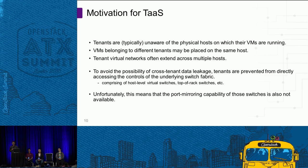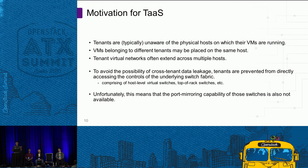Given these two architectural characteristics, we can make certain observations: tenants are typically unaware of where their VMs reside in the cloud; VMs belonging to different tenants may be co-located on the same host; and tenant virtual networks often span across multiple hosts. As a result, a tenant is typically not allowed to access the controls of the underlying switch fabric — whether host-level virtual switches or top-of-rack physical switches. Unfortunately, this means that port mirroring is not available to a tenant, and that is the actual problem space we are trying to solve.